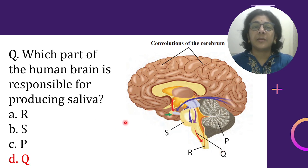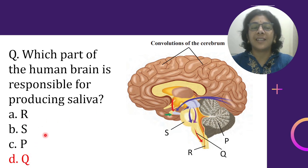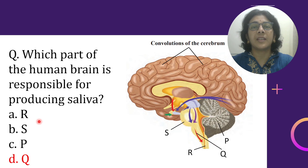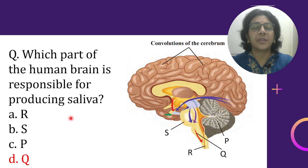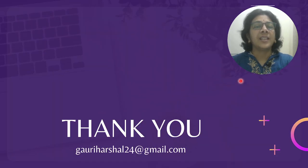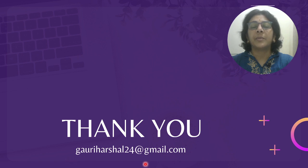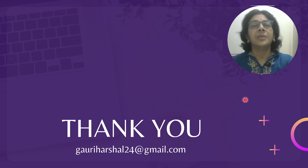The brain topic is frequently asked in exams, so study it thoroughly. Tricky questions are made here — notice how the options are given as RS, PQ instead of PQRS directly. In exam pressure, you need to think calmly. Keep practicing, always check the parts of the brain, their labels, and their functions — this is an important topic from the exam point of view. My mail ID is also shared here; if you have any doubts or need to understand any concept from the biology section, you can contact me.